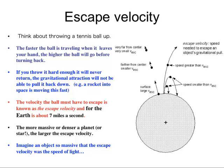Now imagine that the Earth was more massive. The more massive and more dense the planet or star is, the higher that escape velocity is. So imagine you had an object that was so massive that the escape velocity was larger than that of light. 7 miles a second is the escape velocity of Earth; 186,000 miles a second is the velocity of light. You could do this thought experiment that maybe you could have objects so dense that even light couldn't escape.